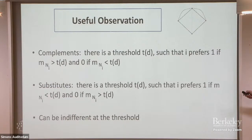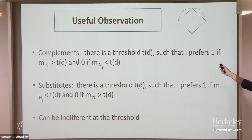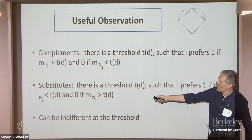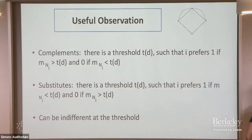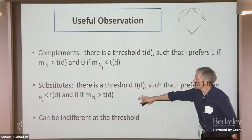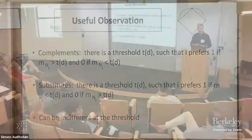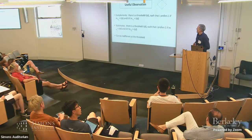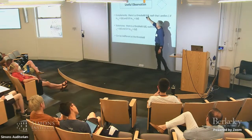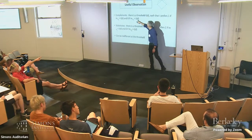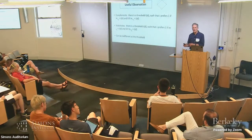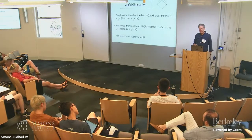Useful observations on complements: if you look at my degree and everyone has the same basic payoff structure as a function of degree and neighbors' actions, there'll be a threshold such that I prefer to take action 1 if the number of people in my neighborhood above that threshold, and take zero otherwise. In complements, more friends taking the action means I want to take it more. For substitutes, it goes the opposite way.